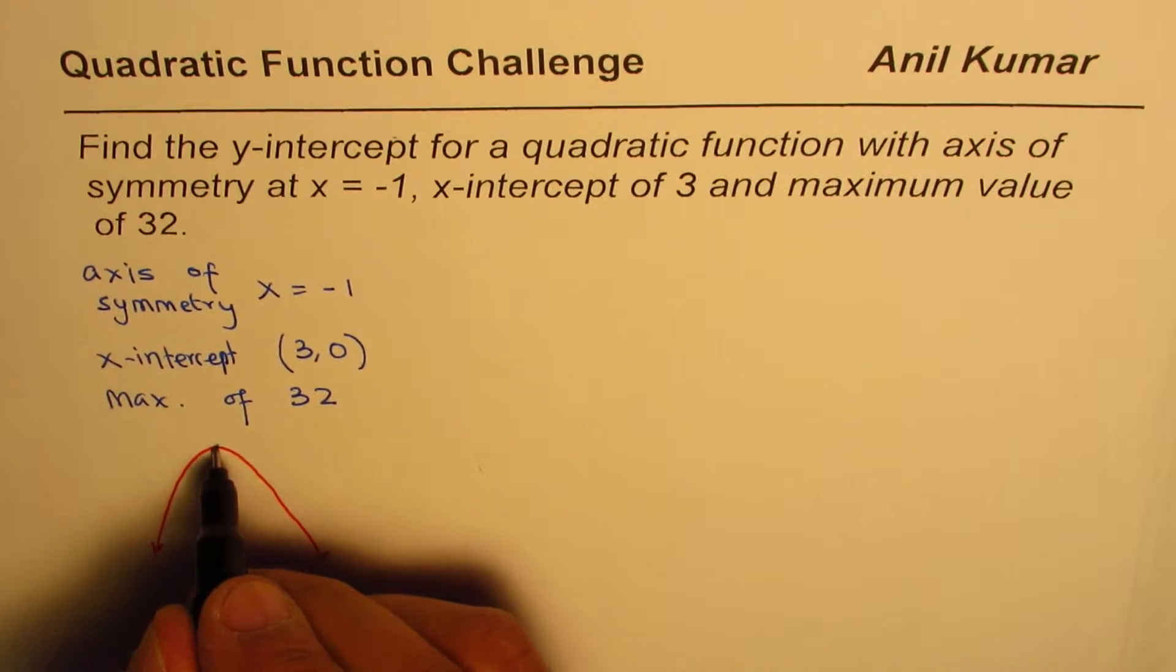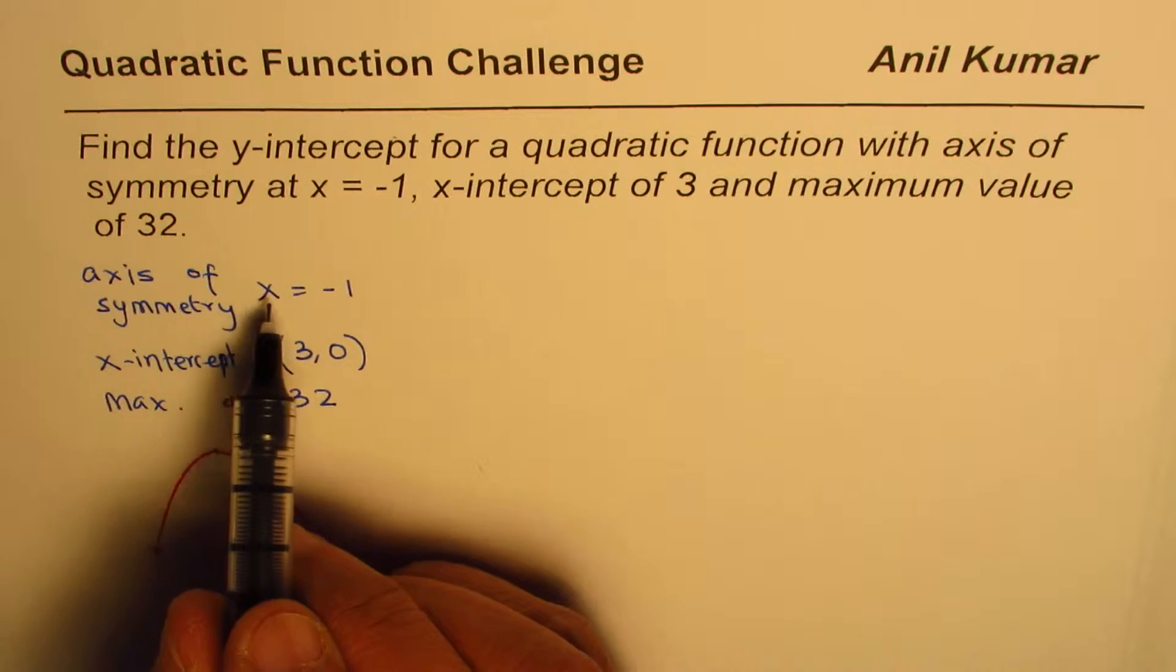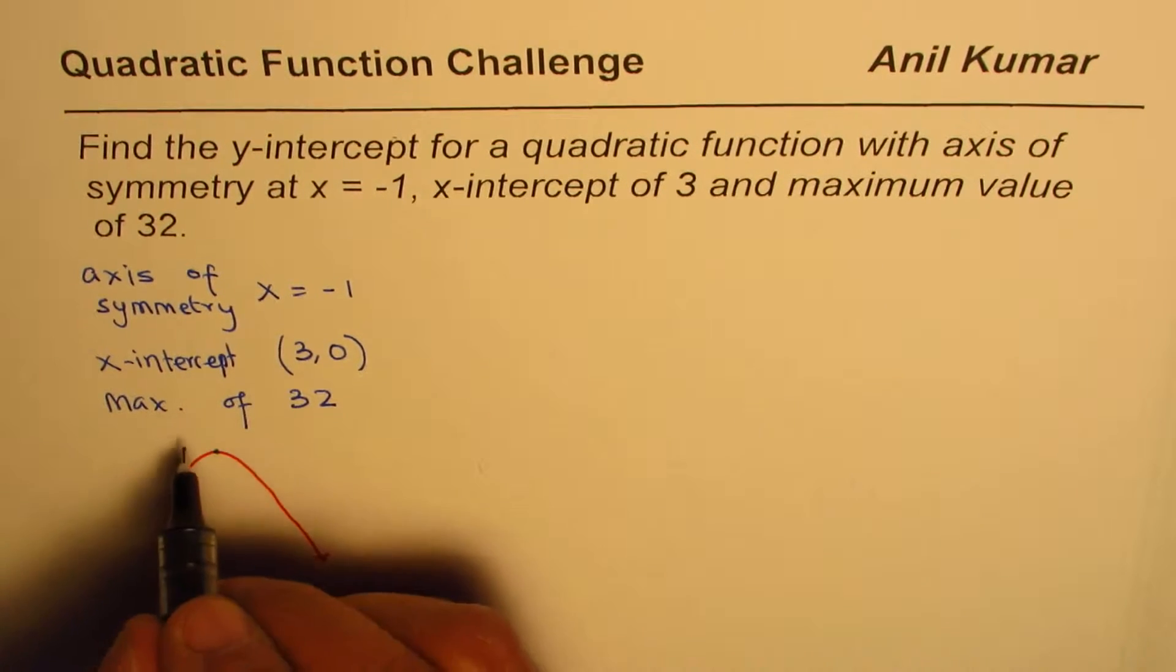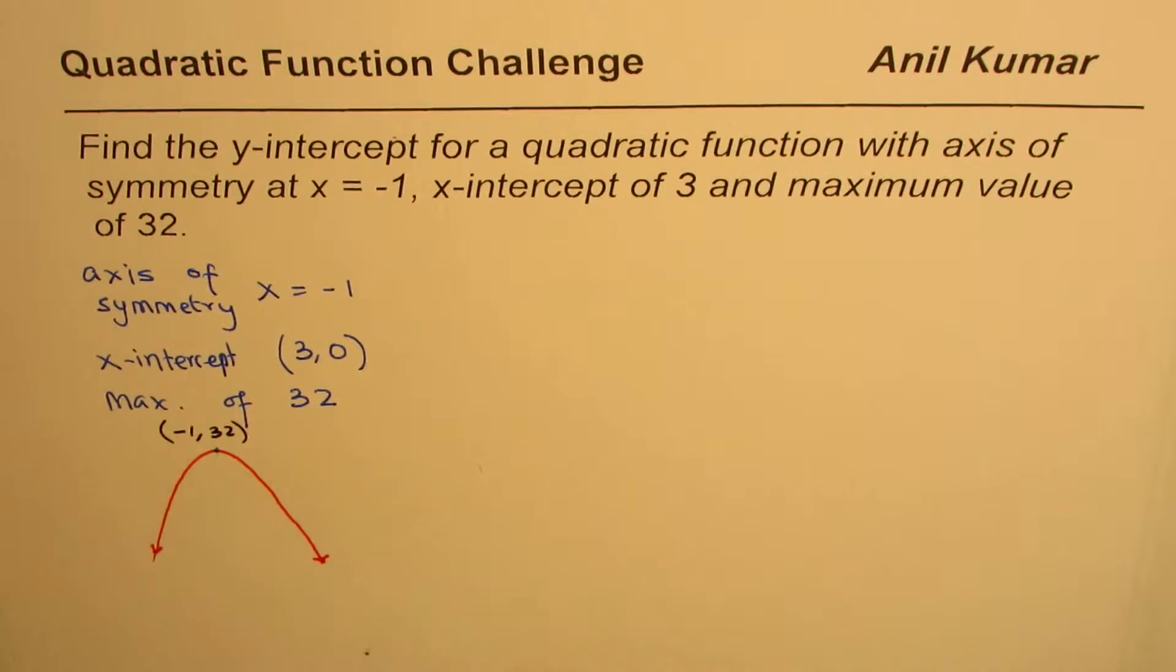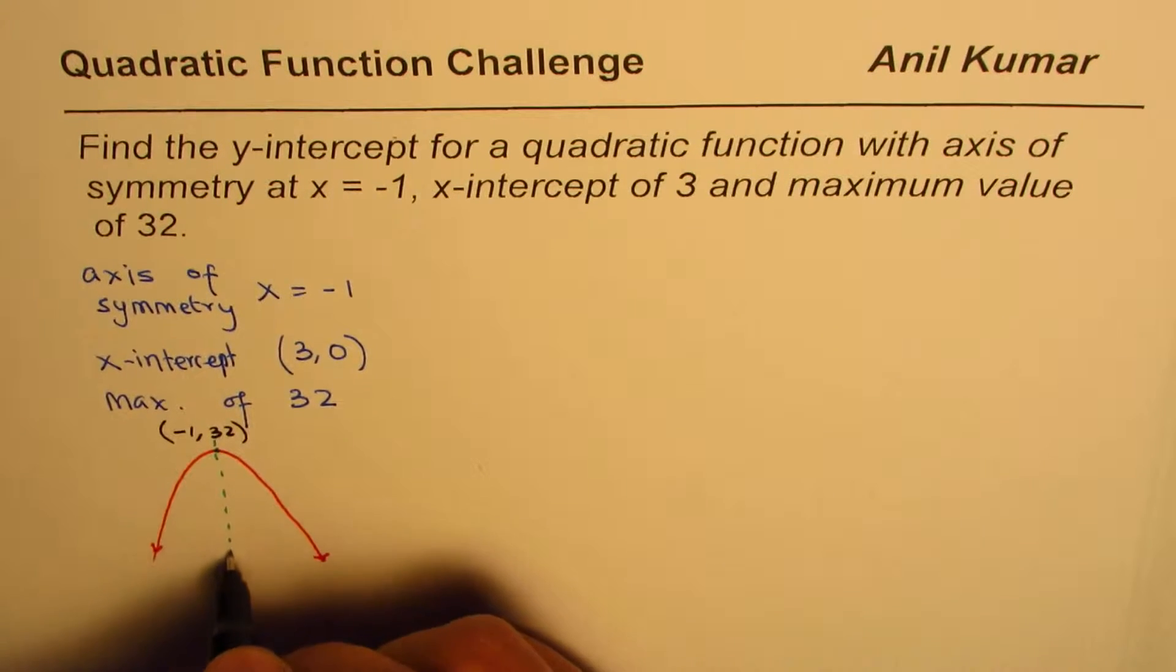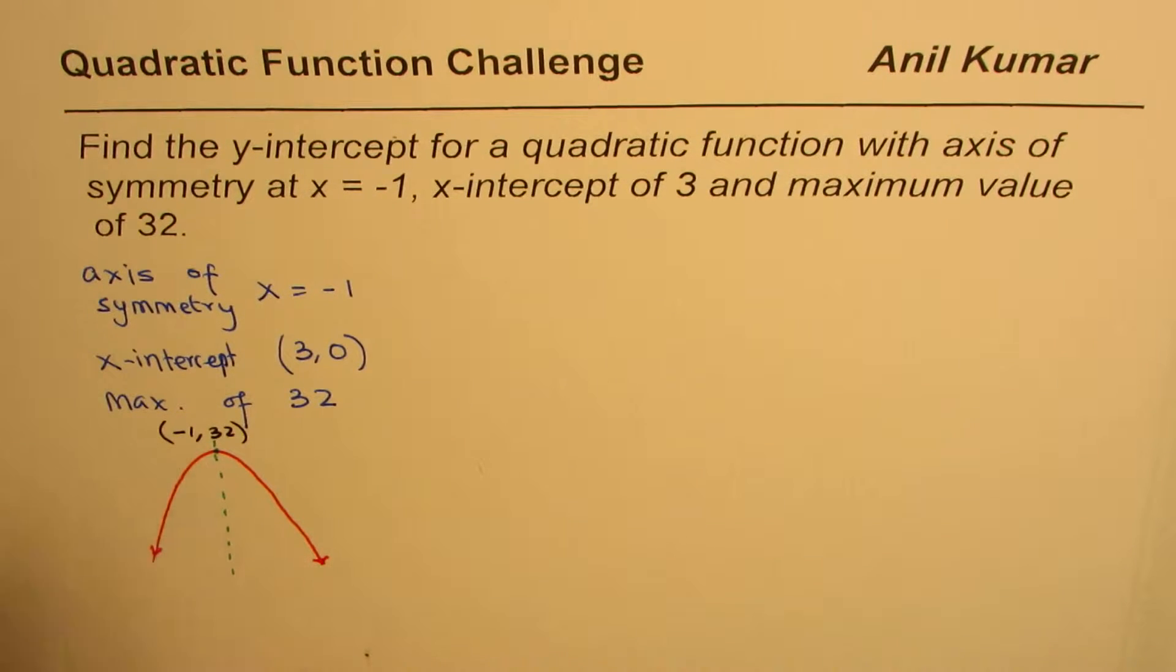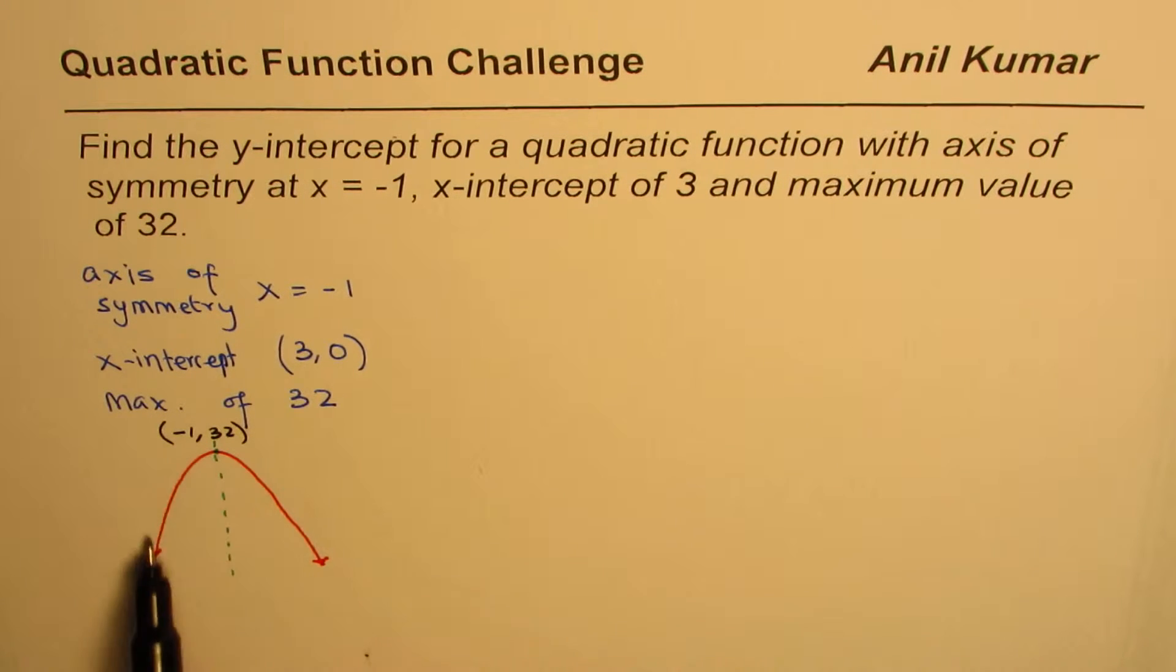Now that seems to be the point of the vertex. What should be the vertex in this particular case? Since the axis is at minus 1, this point vertex will be minus 1, 32. Only on the axis will we have the vertex. That's how it is.